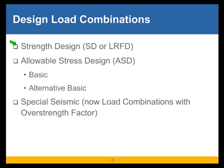ASCE7, the committee, is actually kind of against that set of load combinations, but they continue in the IBC. They actually come from the 1994 edition of the Uniform Building Code, which remained unchanged in the 1997 edition of the UBC. With one minor addition, we are looking at the UBC load combinations as alternative basic ASD. ASCE7 has never included that set.